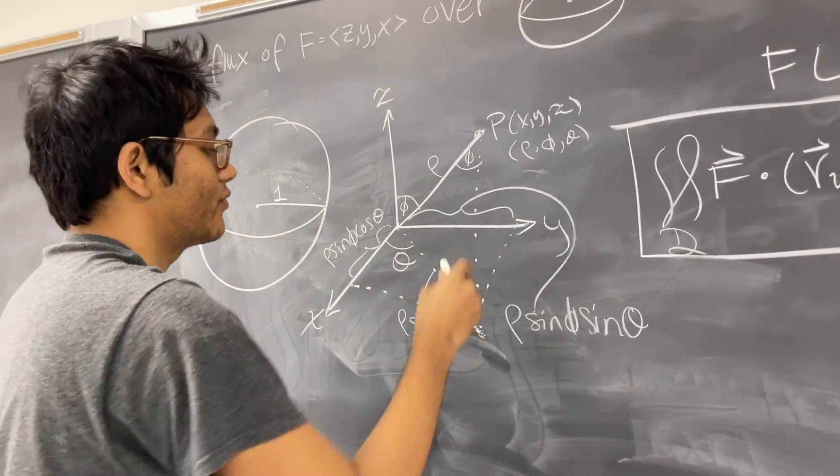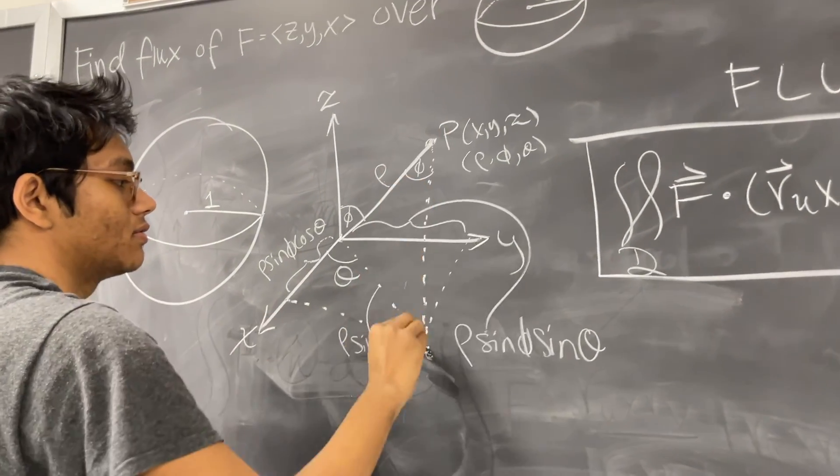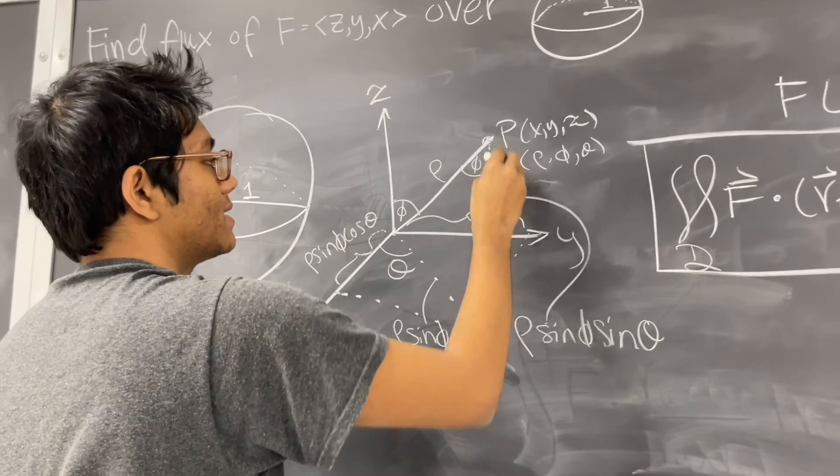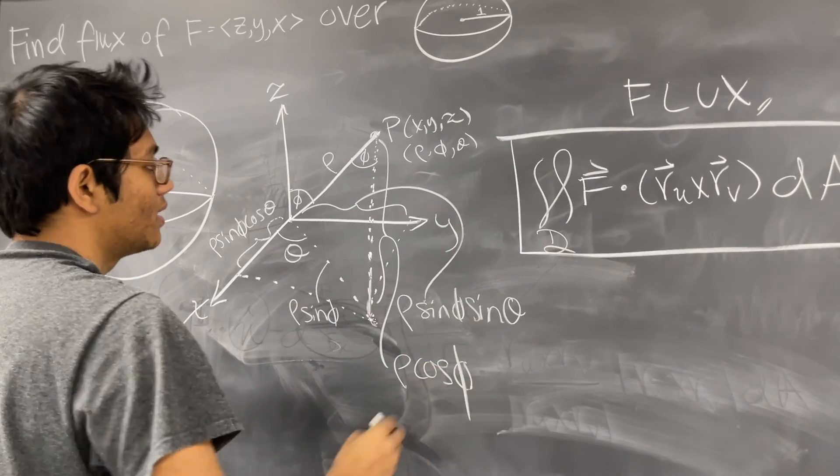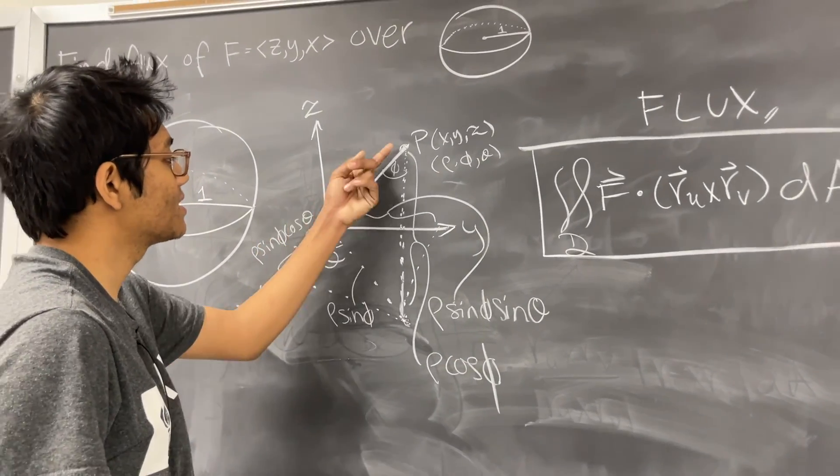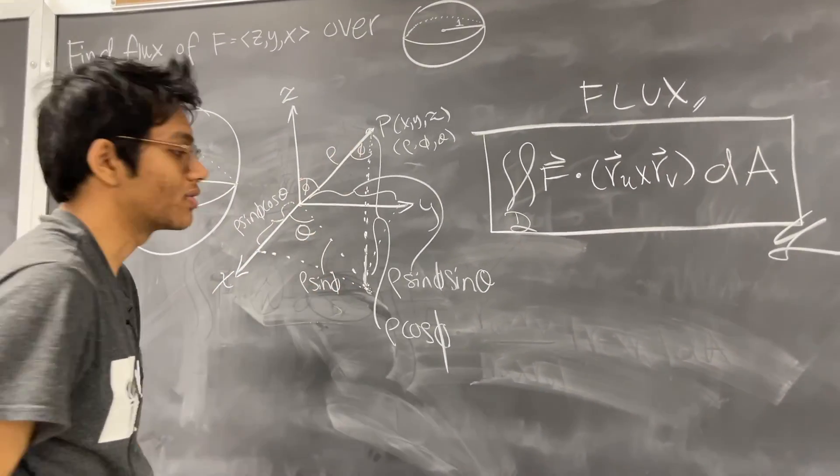So now don't forget also to parametrize Z, which is this one, and this is simply rho cosine phi. Okay, if you're wondering why that is, this is rho, this is phi, hence this is rho cosine phi.